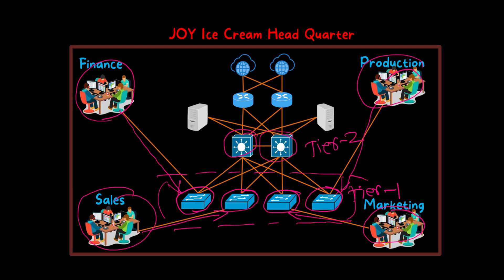Other than the access switches and distribution switches, we have two routers which are used as a gateway to this network. We also have two internet connections from the service provider. This is the current network setup of Joy Ice Cream headquarter. Now, what will happen when the Joy Ice Cream company grows more? They will need more people, they are going to extend their business, they will need a bigger office space.